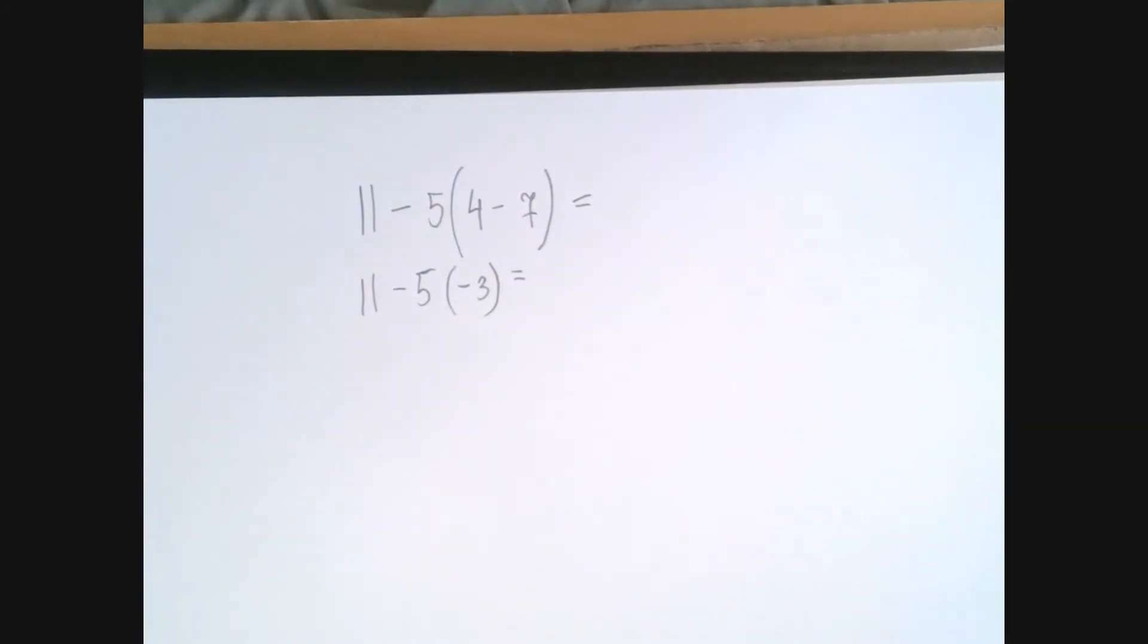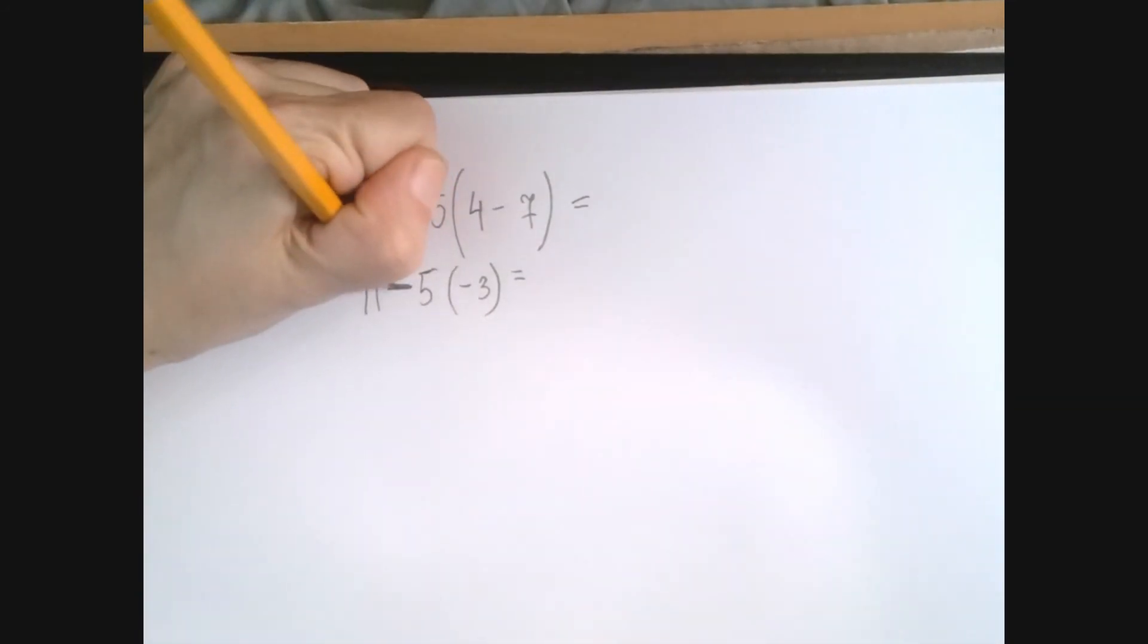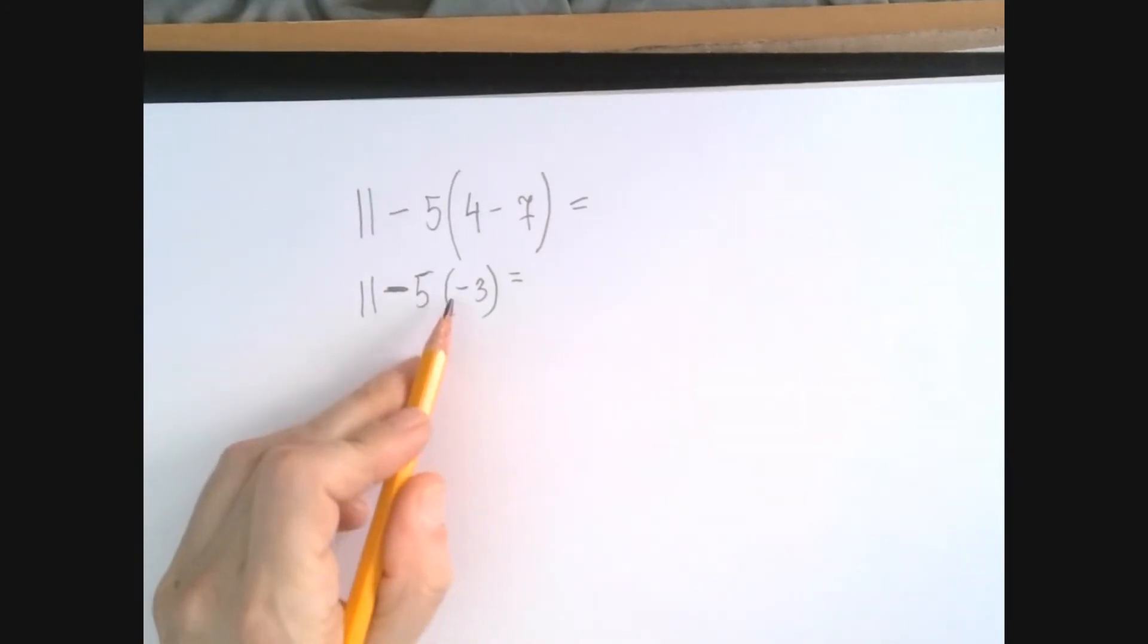Okay, this is sort of a dangerous one, because this minus here means subtract, and this minus here describes the number as being negative. So this is an operation, this isn't.